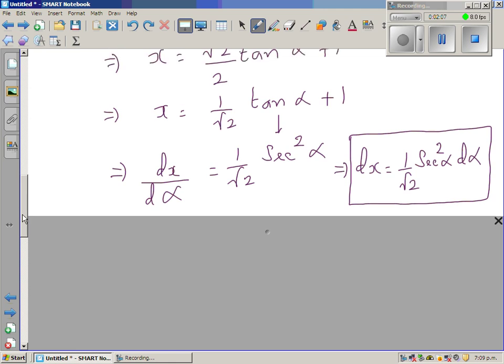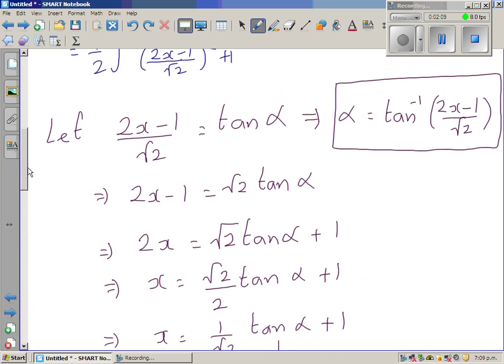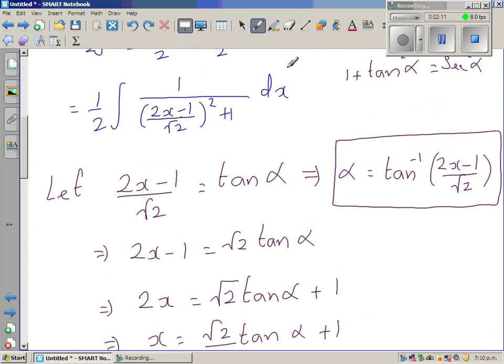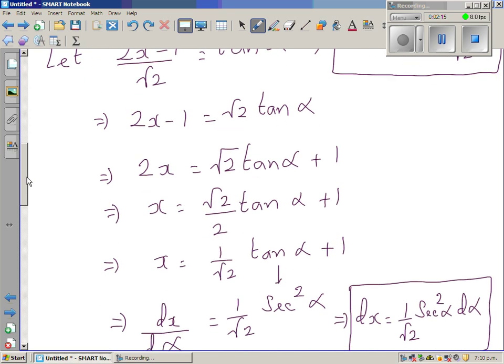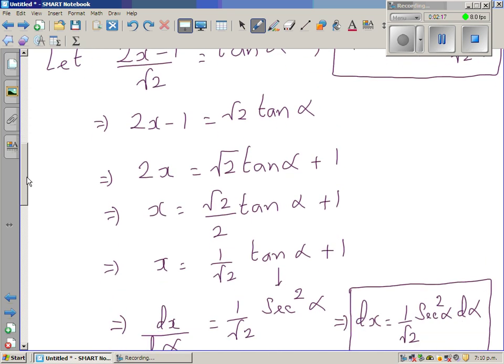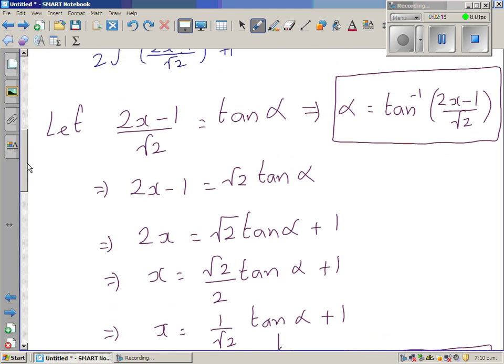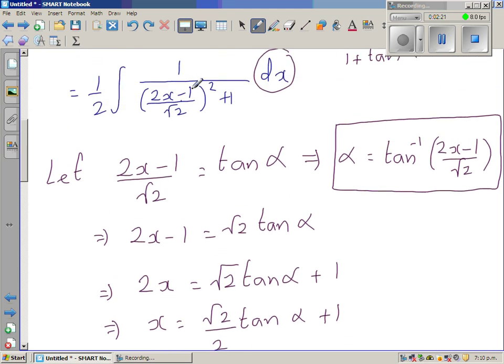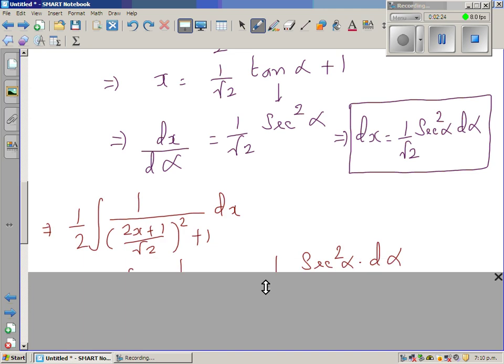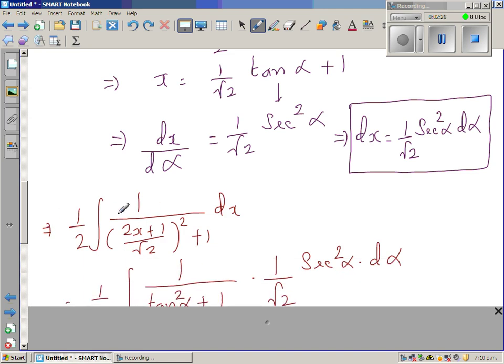So in place of - what I've done is we are changing everything in terms of a trig form. So dx can be written as 1 over root 2 sec squared alpha d alpha and this can be written as tan squared alpha. So I've written in this form again.